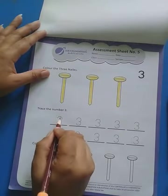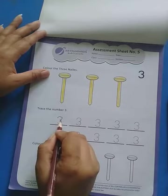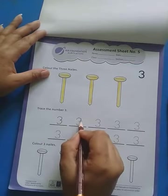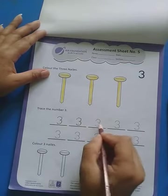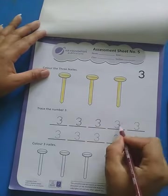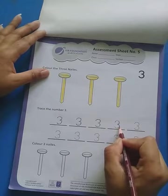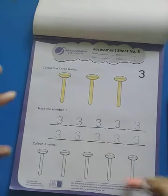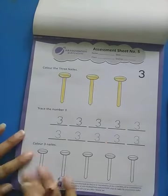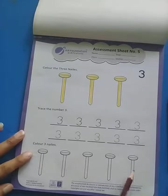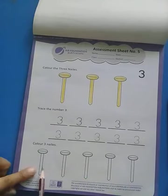Come to next — trace the number 3. How we write number 3: make a C from right to left, again make a C from right to left. Trace the number 3. Make a C, again make a C from right to left. Students, trace all these numbers. Come to next work — color three nails: 1, 2, 3, 4, 5. We have five nails but we have to color three nails: 1, 2, 3.